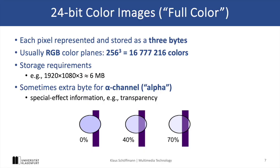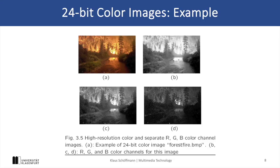If you also add a transparency channel, we would increase the required storage by 33%. The example on this slide shows us how the different color channels are combined to form the resulting RGB color image.